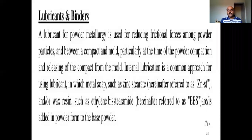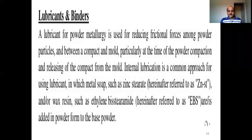Internal lubrication is a common approach, in which metal soaps such as zinc stearate and wax resins such as ethylene bis-stearamide are added to the powder to form a base powder. Generally, internal lubricants such as soaps and wax resins are added to the powder to form the base powder, and these act as lubricants. They reduce the internal friction among the powder particles and even between the compact and the mold.